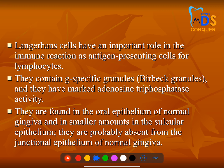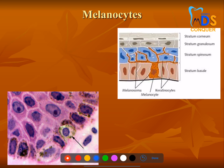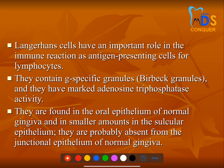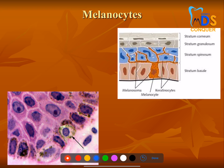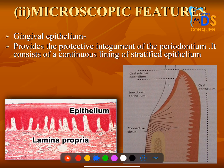Langerhans cells have a characteristic star shape and contain Birbeck granules, which play an important role in antigen presentation. Melanocytes produce melanin and are present in the stratum basale and stratum spinosum. Merkel cells have sensory nerve fibers and help in tactile perception.